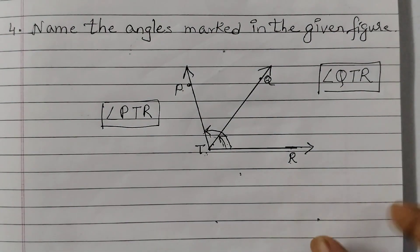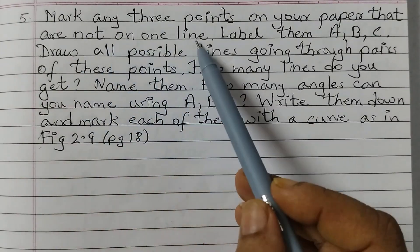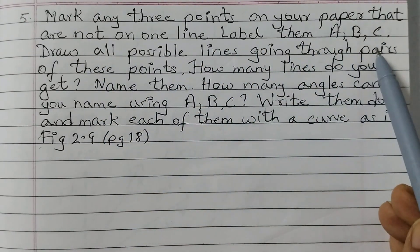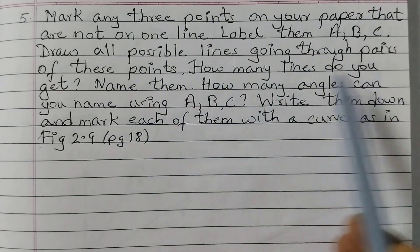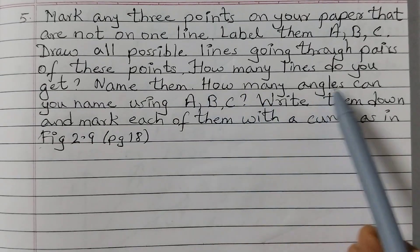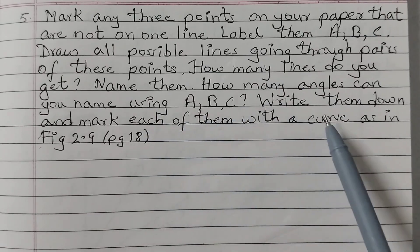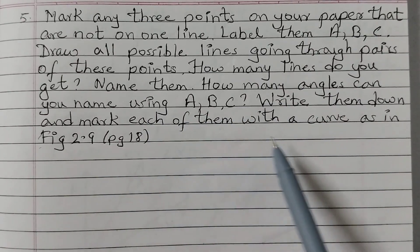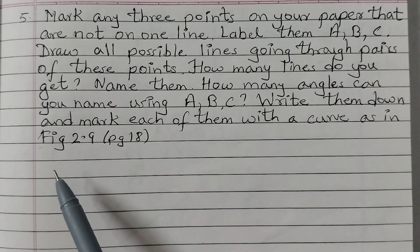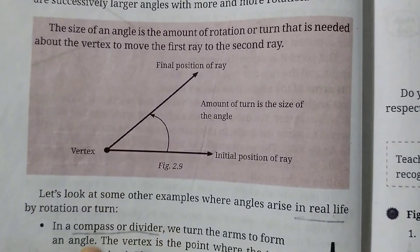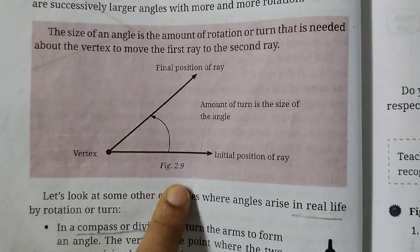Moving on to question number 5. Mark any 3 points on your paper that are not on one line. Label them A, B, C. Draw all possible lines going through pairs of these points. How many lines do you get? Name them. How many angles can you name using A, B, C? Write them down and mark each with a curve as in figure 2.9, which is given on page number 18 of the textbook.